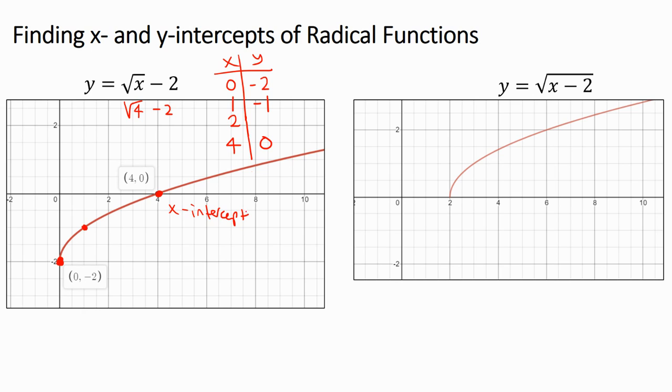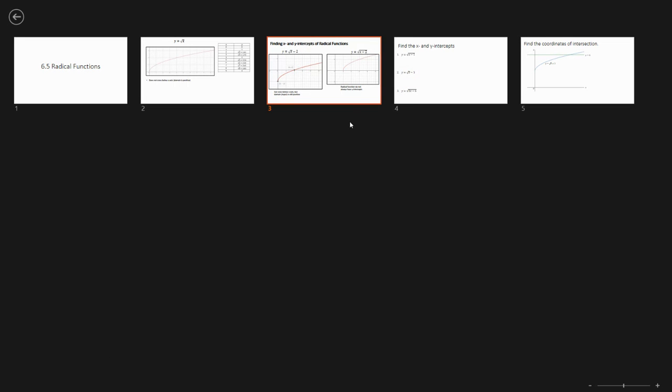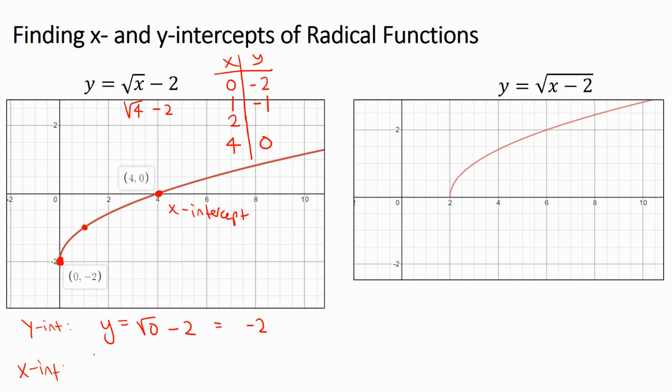Now how would we find that by hand? Remember to find the y-intercept you plug in 0 for x and solve for y. That's why this ends up being negative 2. And to find the x-intercept, plug in 0 for y and you have to solve this equation for x.